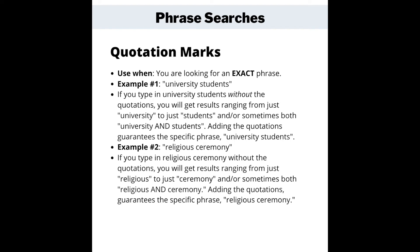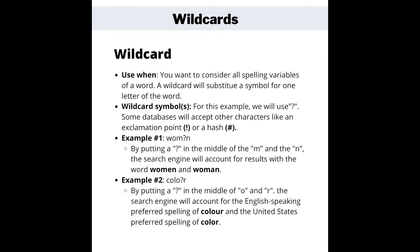Wildcards help you consider all spelling variables of a word by substituting a symbol for one letter of the word. For this example, we will use a question mark as our wildcard symbol. Some databases will accept other characters like an exclamation point or a hash as wildcards. The first example shows WOM?N. By putting the question mark between the M and the N, the search engine will account for results with the word woman or women.